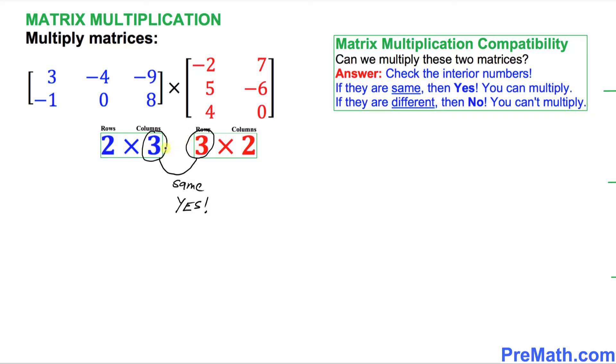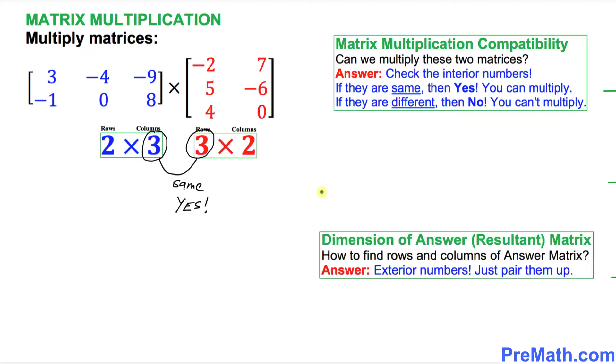Had these numbers been different, then it's impossible. And finally, we are going to find out how our answer matrix is going to look like. What is going to be the dimension of our resultant matrix? To check that, focus on the outside, the exterior numbers. Just pair them up, so this is going to give us 2 by 2. That means our answer matrix is going to have two rows and two columns.